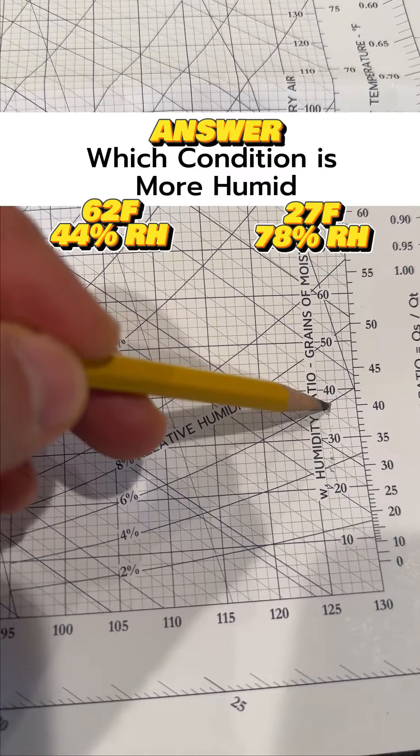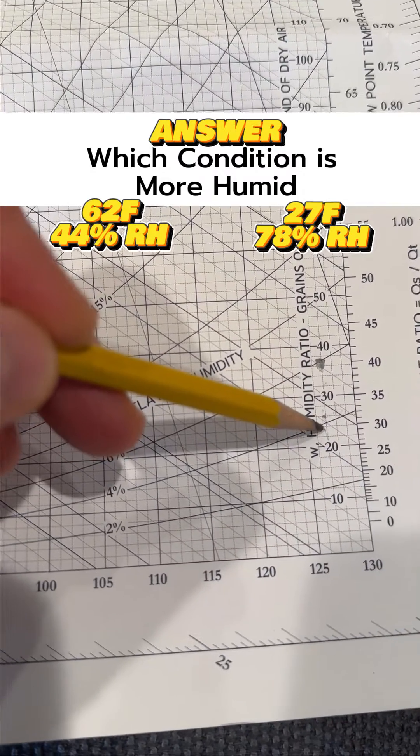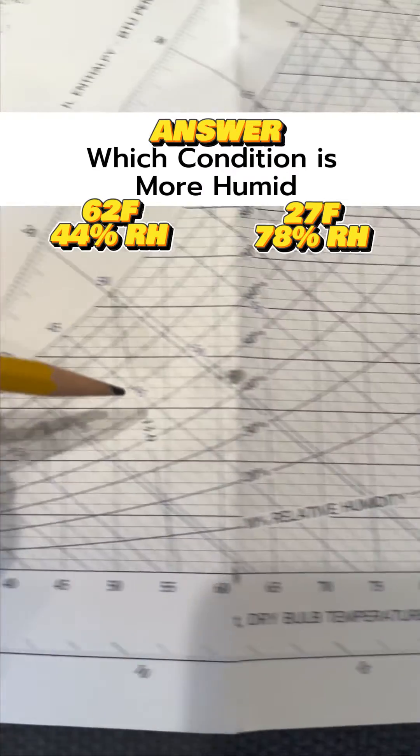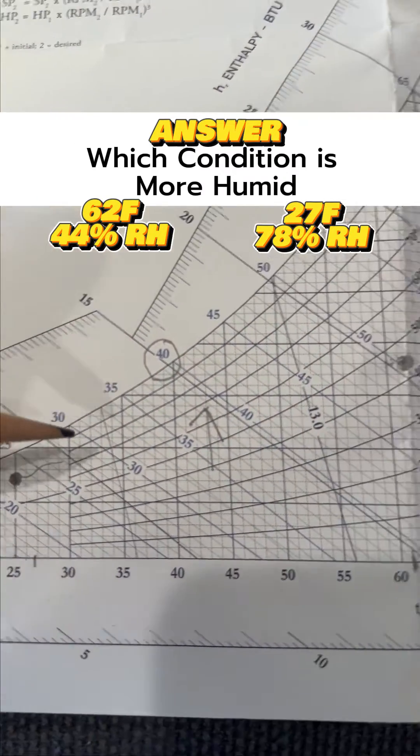And the second condition had 22 grains, which is about right here. So you can see, you can use the grains or you can use the dew point, whatever you're more comfortable with.